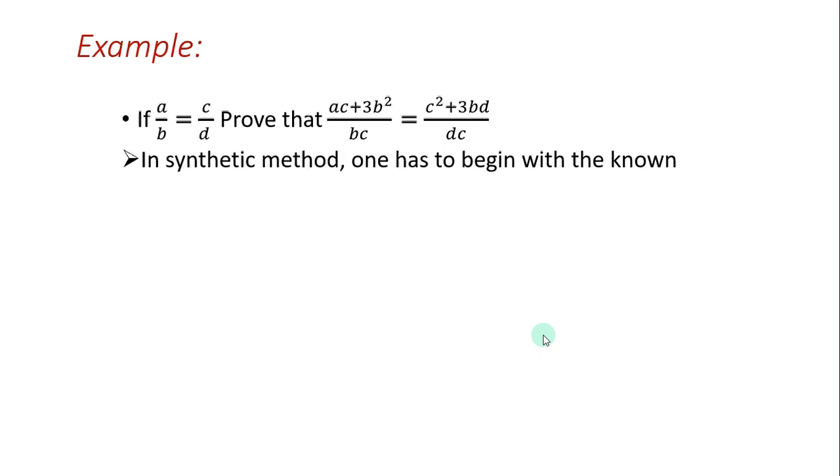Now, let us take one example. If a/b equals c/d, prove that ac+3b² / bc equals c²+3bd / dc. This is our problem. Now, we have to take the known part. In this synthetic method, one has to begin with the known thing, that is a/b equals c/d, and reach the unknown, that is ac+3b² / bc equals c²+3bd / dc.